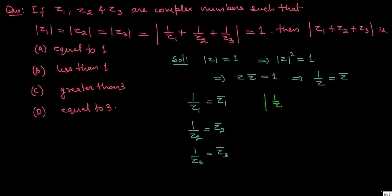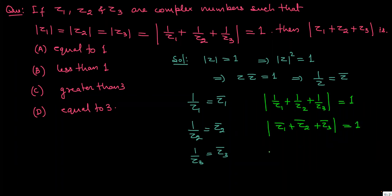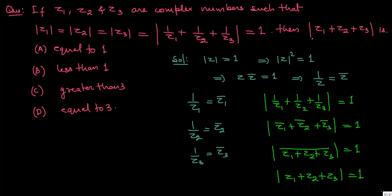So the mod of (1/z1 + 1/z2 + 1/z3) equals mod of (z1-bar + z2-bar + z3-bar), which equals mod of (z1 + z2 + z3)-bar, and that equals mod of (z1 + z2 + z3), which is equal to 1. The value asked is 1. A is the correct option for this question.